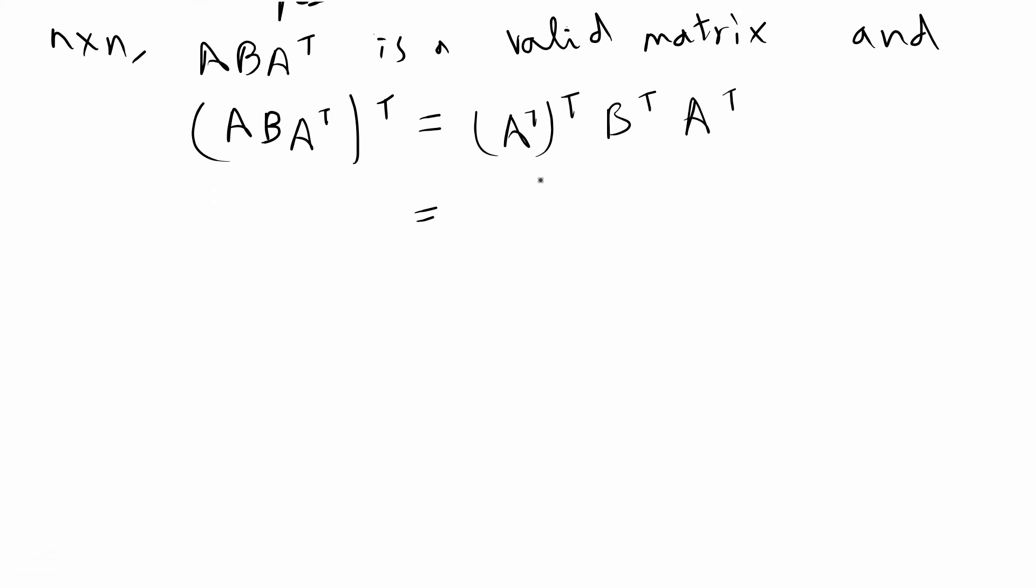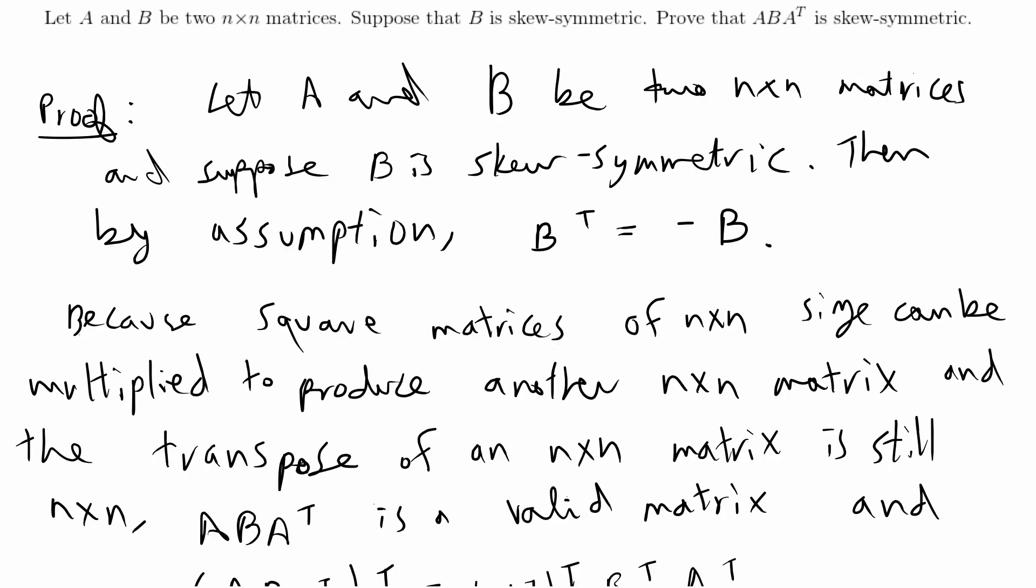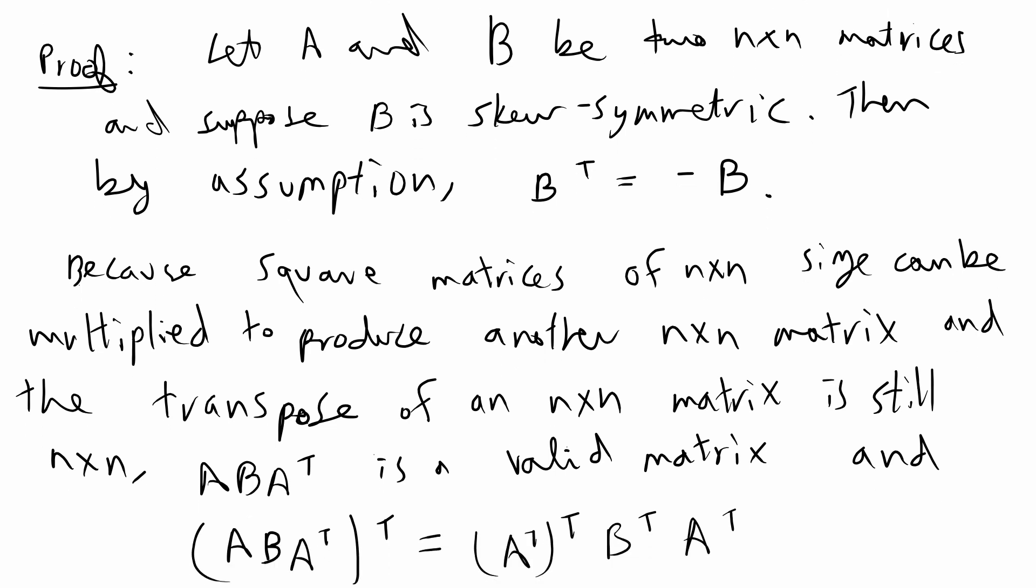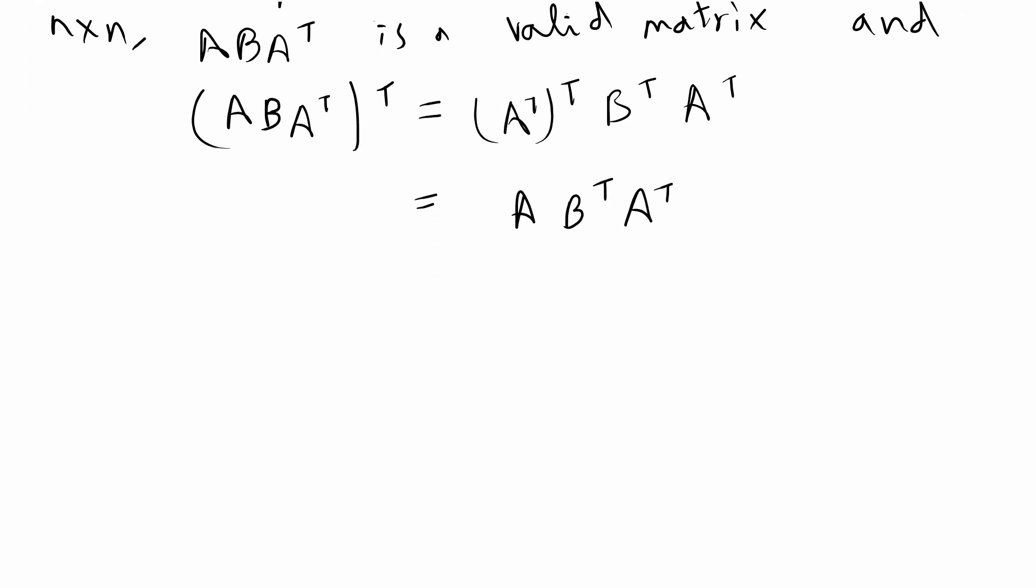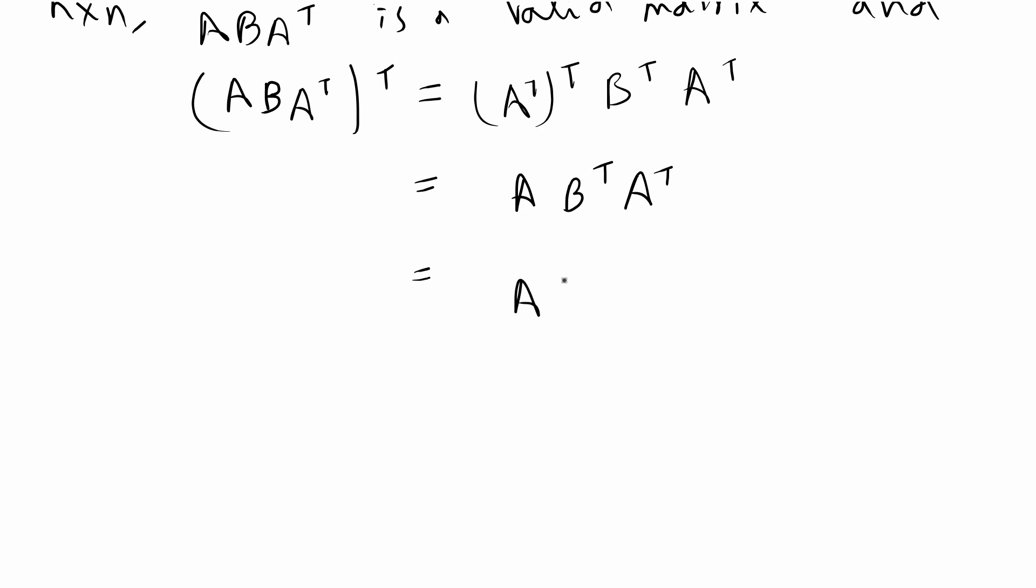So that is equal to A B^T A^T. We are given that B is skew-symmetric. So we have already said that B transpose is equal to negative B. So let's go ahead and plug that in for B transpose.